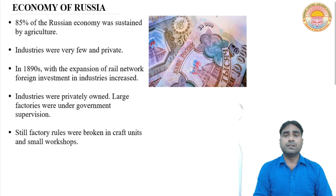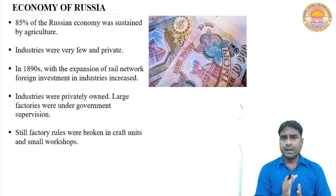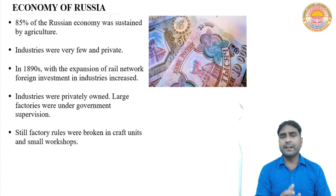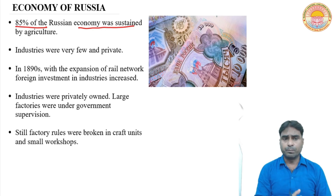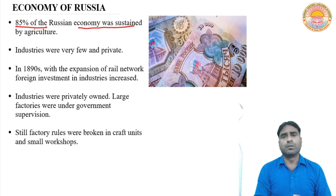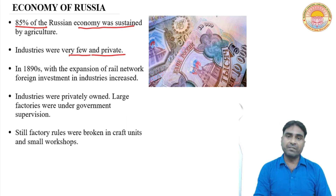Now we will talk about the economy of Russia. As we saw, Russia's empire was very large. Russia had an economy based on agriculture — 85% of the Russian economy was sustained by agriculture. This means the maximum people of Russia were dependent on agriculture, producing food grains to earn income, and this was also the income of the government. Industries were very few and private — their numbers were small, and the industries that existed were private, meaning totally based on the capitalist system.